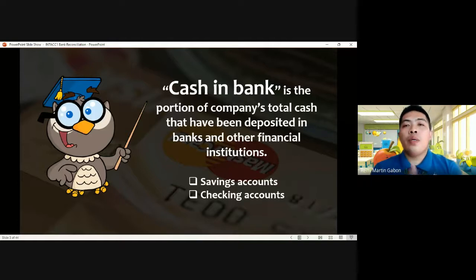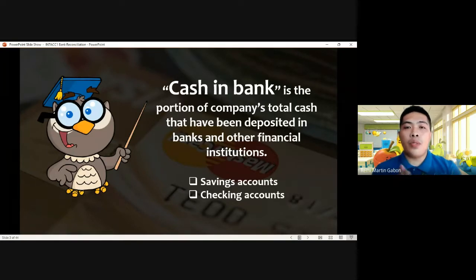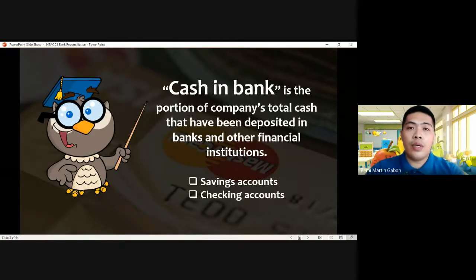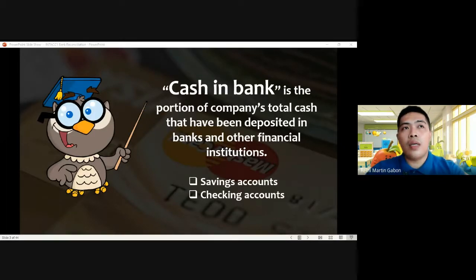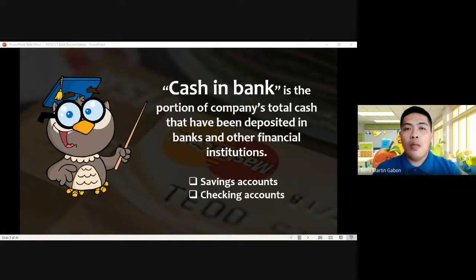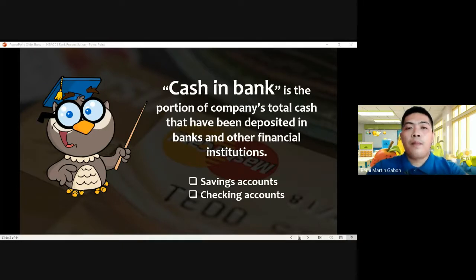Before we go through with our core discussion for bank reconciliation, let us define first cash in bank. Cash in bank, as part of cash assets of an entity, is the portion of a company's total cash that has been deposited in banks and other financial institutions. There are two samples of demand deposit accounts or cash in bank accounts: savings and checking accounts. Savings accounts are usually for safekeeping purposes as part of management control over total cash, while checking accounts relate to the account where checks are drawn and issued to pay.